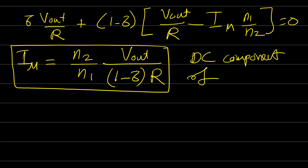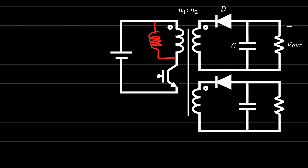The flyback converter is widely used in many applications since it provides isolation. It can also be arranged to provide multiple outputs by adding additional secondary windings. The disadvantage of this converter is the small magnetizing inductance because the input has a discontinuous input current. An air-gap core transformer is a good solution, and increasing the number of winding turns will increase the magnetizing inductance as well. This is everything for this lecture — I hope you enjoyed it, and I'll see you next time.